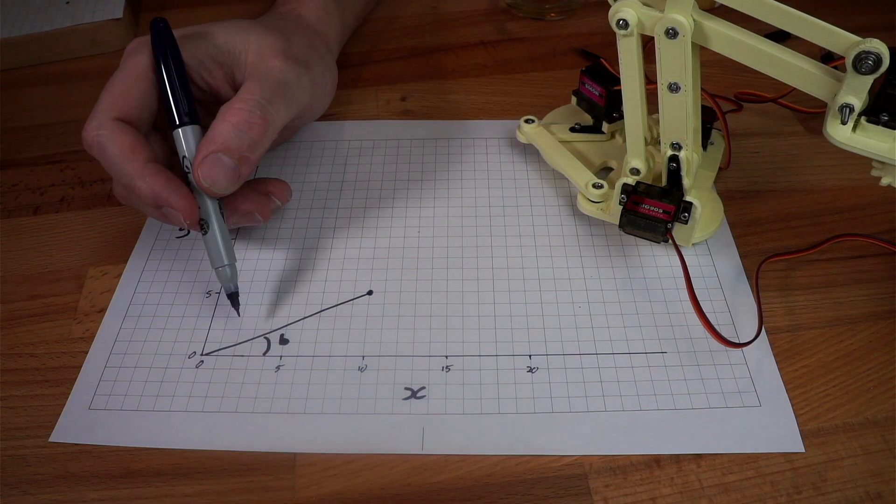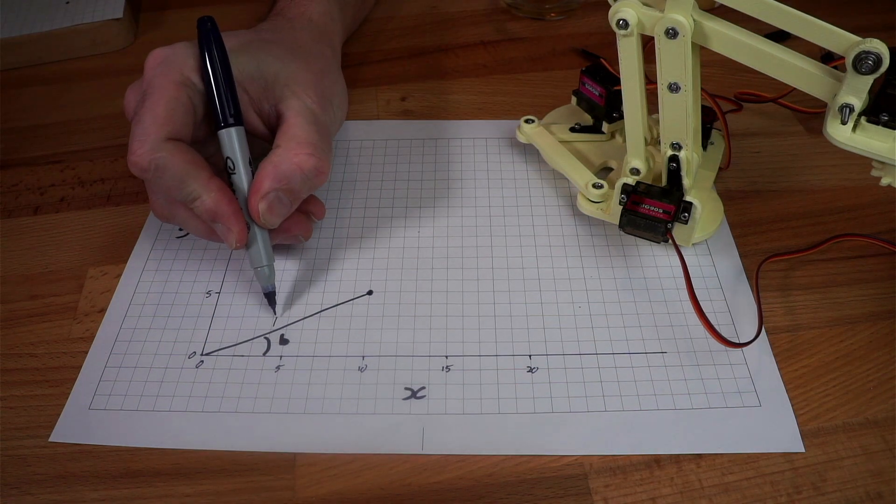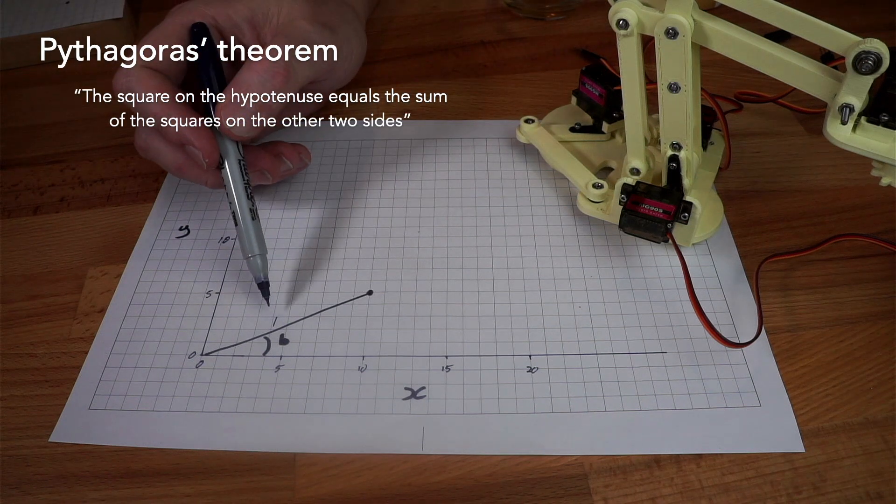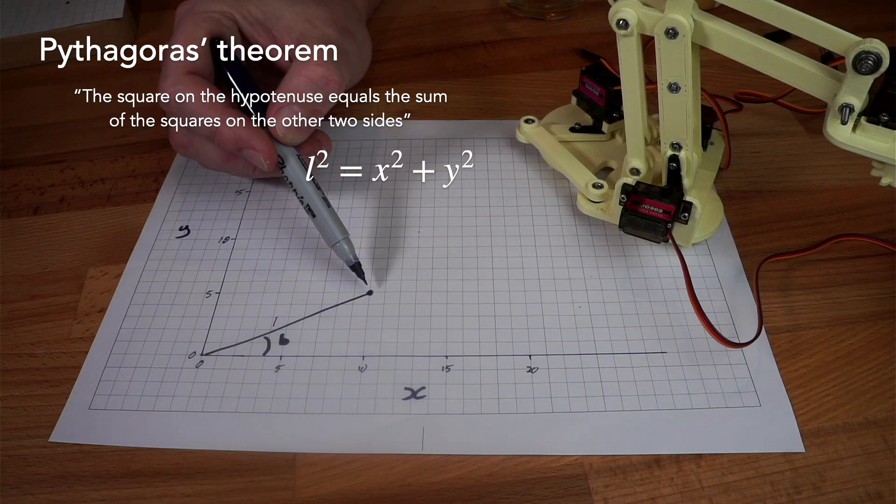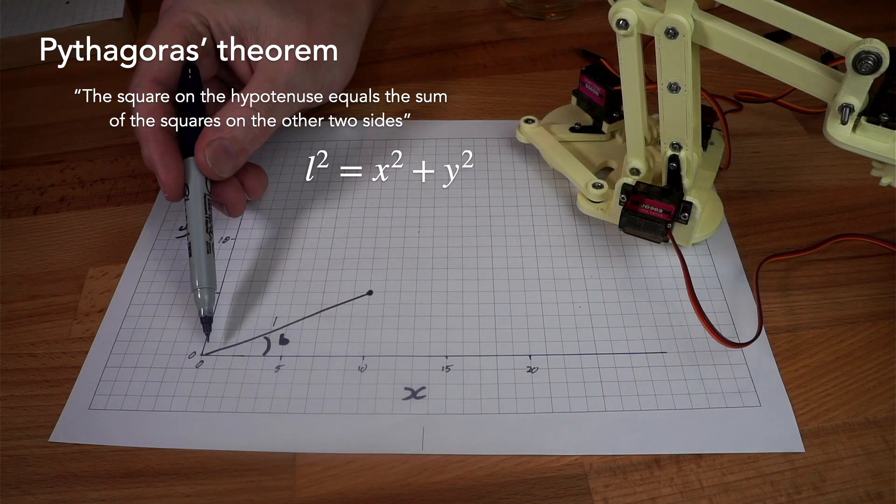We also need to work out the length of this side. Let's call it L. Using Pythagoras we can say that the square of L is simply the square of this side plus the square of this side.